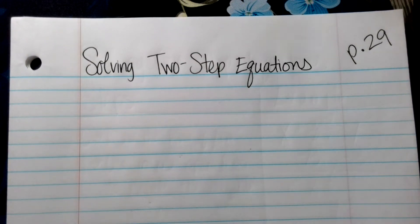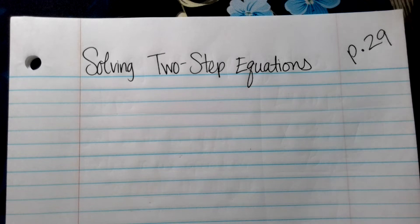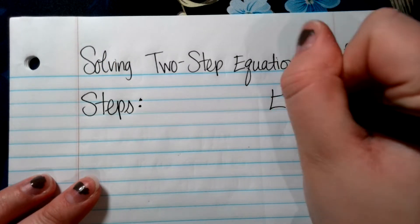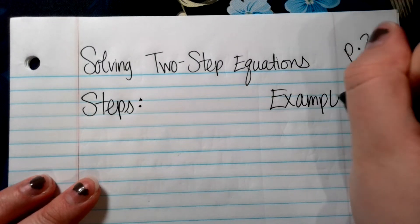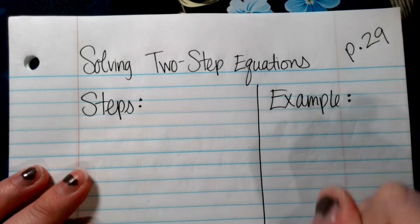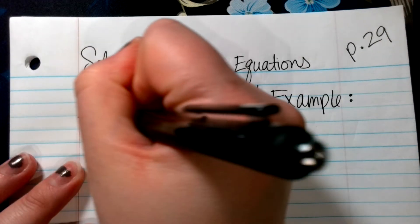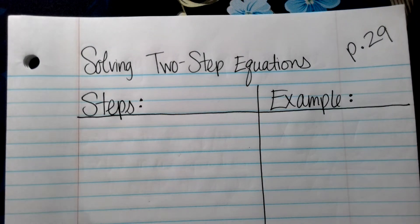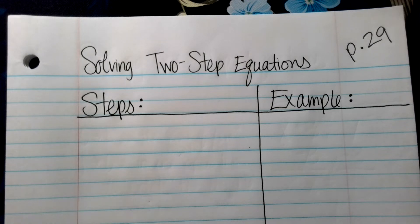In 6th grade we learned one-step equations. We're taking it a step further — in 7th grade we're solving two-step equations. While I'm giving you steps I'm going to be showing you what that looks like in an example. I'm going to color-coordinate my steps with my example. I recommend using markers, colored pencils, or colored pens so you can color-coordinate like I'm doing — I think that'll really help you see things better.